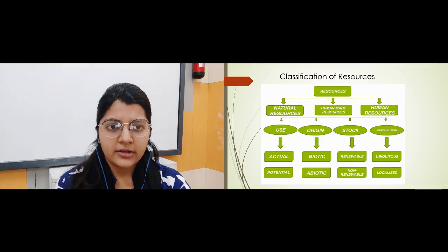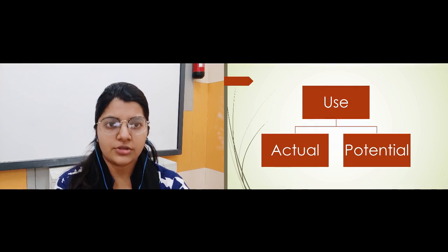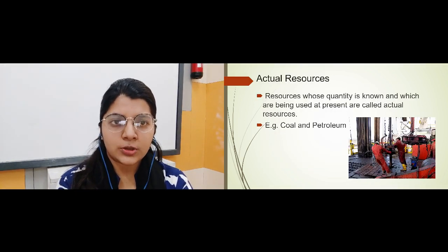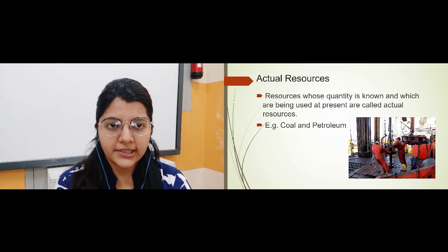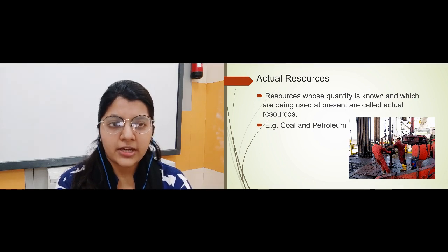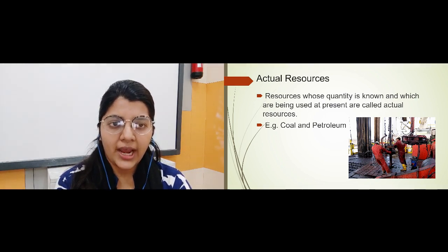Under natural resources, on the basis of use, we have actual resources and potential resources. Actual resources are those resources whose quantity is known — that is, we know in what quantity these resources are present — and we are using them in the present.